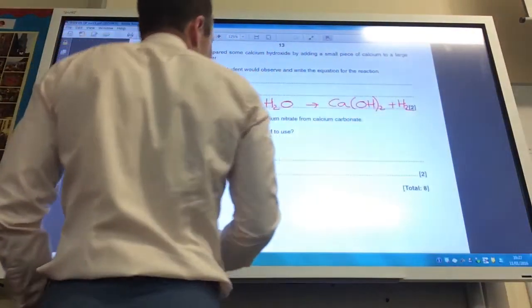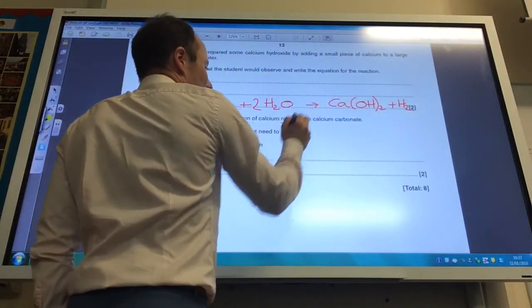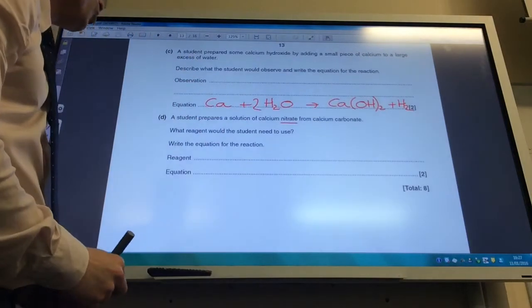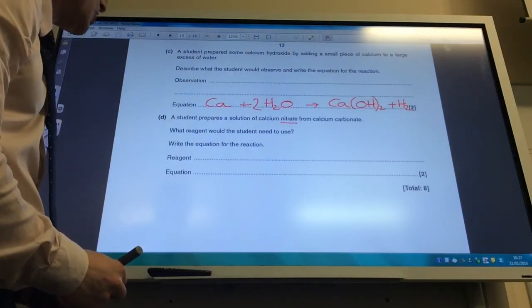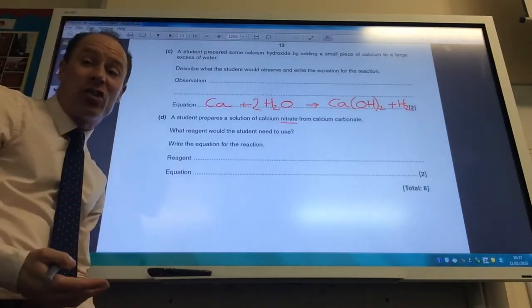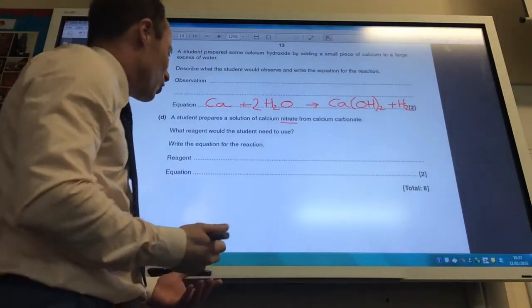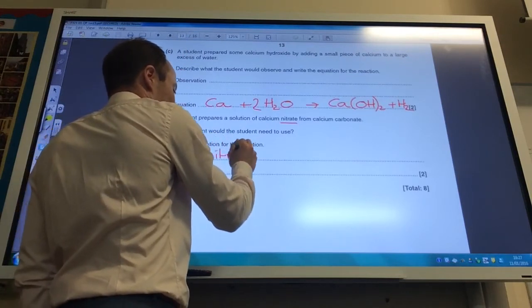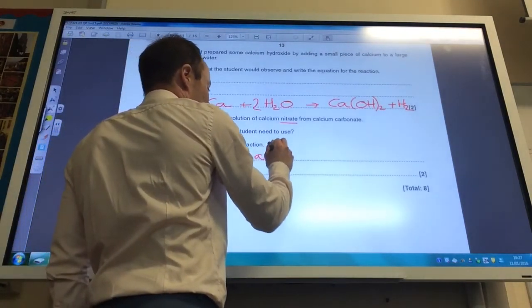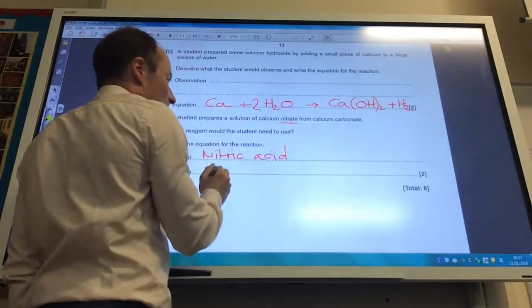A student now prepares a solution of calcium nitrate from calcium carbonate. So what would the student need to use and write an equation? Well, they're going to need to use nitric acid now because it's a nitrate. So nitric acid would be required.